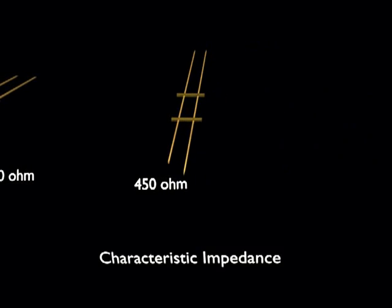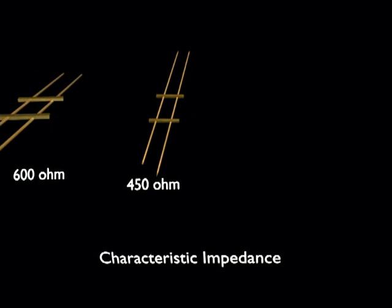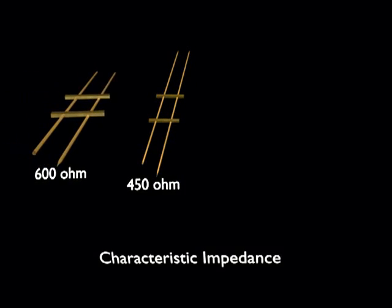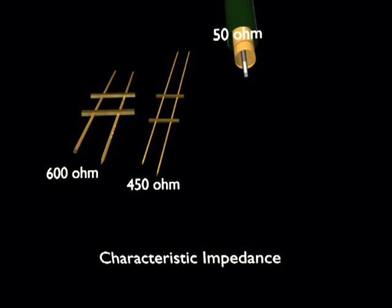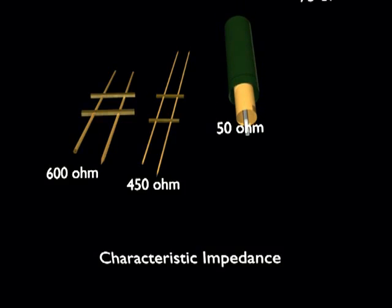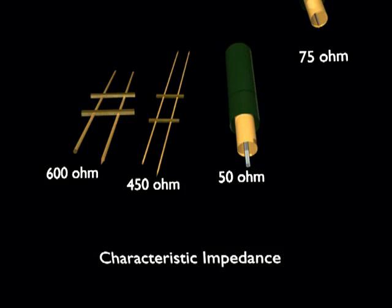First, we should take note that feed lines have a parameter called characteristic impedance. This is a value in ohms which is dependent on the physical construction of the feed line. For example, a typical open wire line will have a characteristic impedance of 450 ohms, or if more widely spaced wires are used it may be around 600 ohms. Similarly, coaxial cables typically have characteristic impedances of 50 or 75 ohms.